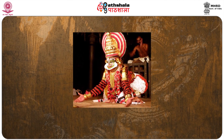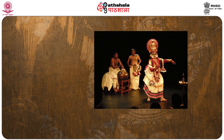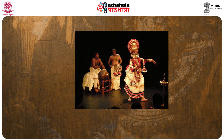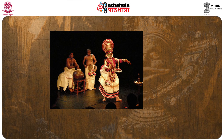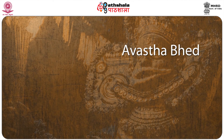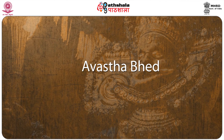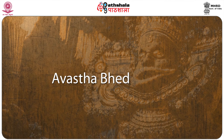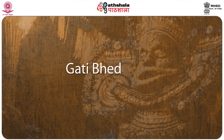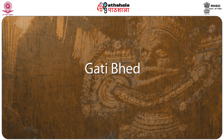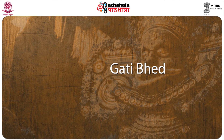Specifically in Kudiyattam, a dance movement on the stage with a set pattern — a diagonal movement done four times facing the four directions and completing a turn — is called Chari. In addition to Avasthabheda (kinds of status/position), Rasa and Katha Patram (character), there is also Gati Bheda — the kinds of gait or foot movement — which is called Chari. In Kudiyattam, every character has their own specific Chari.